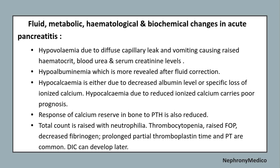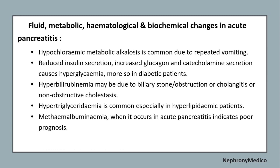Fluid, metabolic, hematological, and biochemical changes in acute pancreatitis include hypovolemia, hypoalbuminemia, hypocalcemia, elevated white cell count with neutrophilia. Hypochloremic metabolic alkalosis may be seen due to persistent vomiting. Reduced insulin secretion, increased glucagon and catecholamine secretion may be seen. Hyperbilirubinemia, hypertriglyceridemia, and methemalbuminemia may also be present.